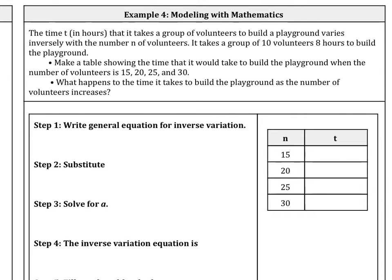So hopefully that makes sense. The more people you have volunteering to build something, the less time it takes, which is why it varies inversely. And so that's what happens to the time as the number of volunteers increases.